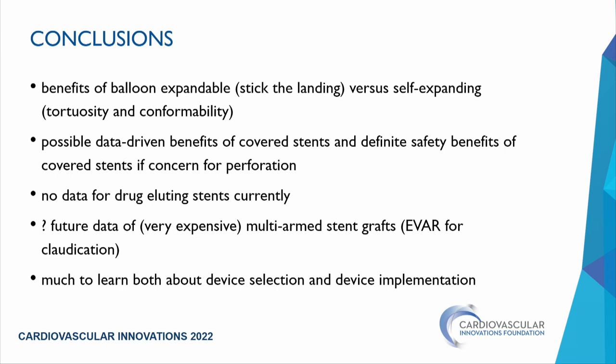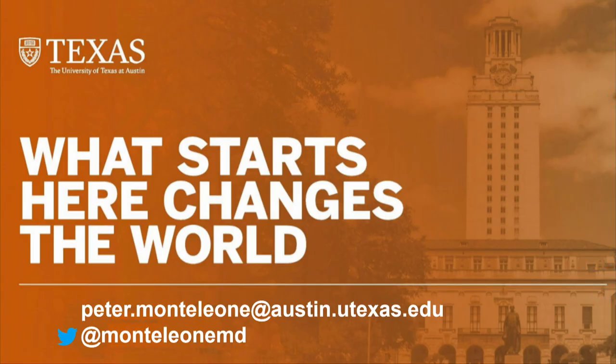In conclusion: balloon expandable stents for sticking the landing with radial integrity; self-expanding stents for tortuosity; some data supporting covered devices, particularly in more complex disease; no data for drug-eluting devices; and the question of EVAR for concomitant aneurysmal and stenotic disease — though very expensive with much still to learn.